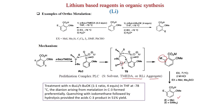On the other hand, treatment with n-BuLi/t-BuOK (super base, 1:1 ratio, 4 equivalents) in THF at −78°C gives the di-anion from metallation. Quenching with iodomethane followed by hydrolysis provides the C-3 acid product in 51% yield.